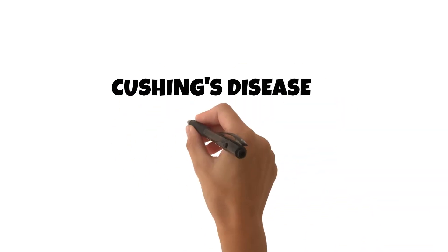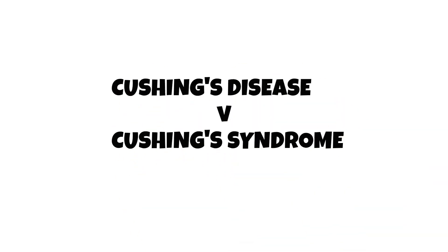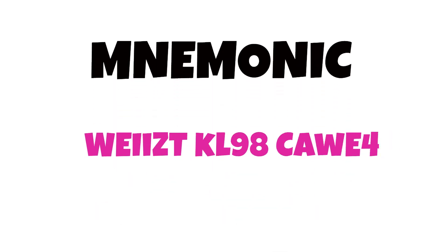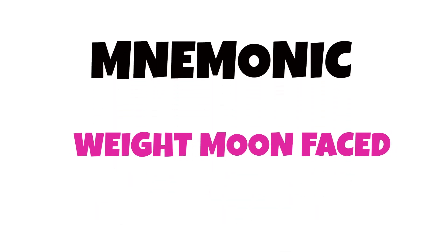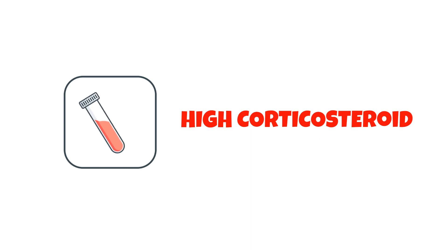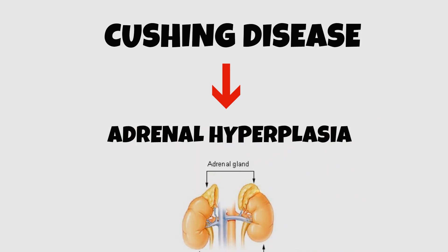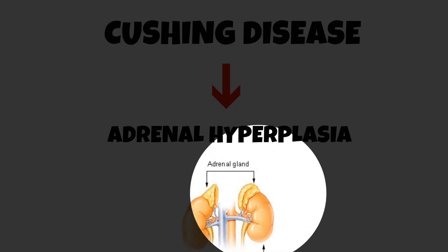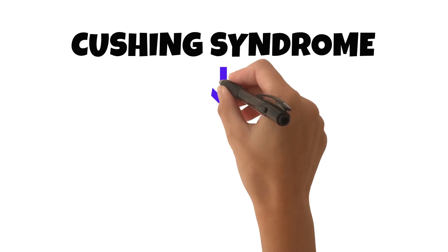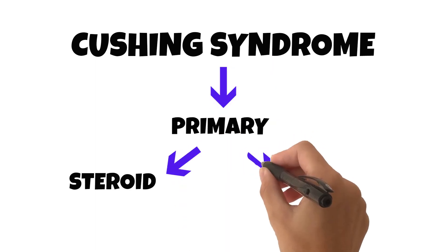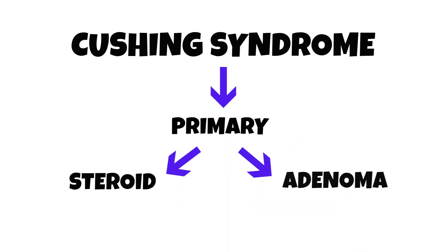Hey guys, welcome back to the channel. Today we're going to be looking at Cushing's disease and Cushing's syndrome, and I'll be providing you with a mnemonic towards the end that will allow you to recall the signs and symptoms. These are conditions due to excessive corticosteroid production. Cushing's disease refers to secondary adrenal hyperplasia due to an increase in ACTH levels, whereas the syndrome is a primary condition, usually due to therapeutic administration of synthetic steroid or adenoma.